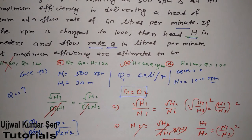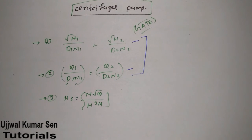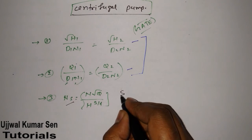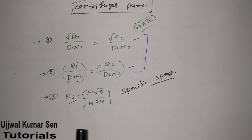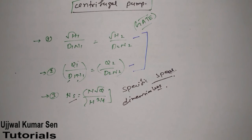Let's review: for centrifugal pumps, three formulas are most important. Using the first two, we solved a GATE previous year question. The third — specific speed ns = n√q / h^(3/4) — is also important. Note that specific speed is a dimensionless quantity — it has no dimension, so remember that.